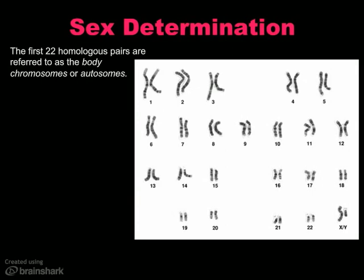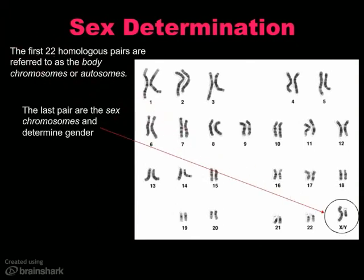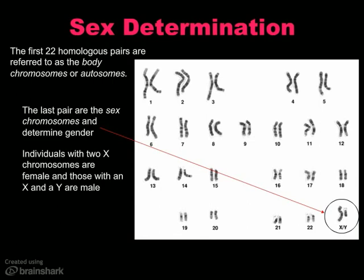Parents can often find out the gender of their unborn baby through an ultrasound, but sometimes they still get a little surprise, as some parts can be mistaken for other parts when still in development. A more invasive way would be through the karyotype. The first 22 homologous pairs of chromosomes are referred to as the body chromosomes or autosomes, and the last two are referred to as the sex chromosomes — the ones that determine gender. For humans, if you have two large chromosomes, you are XX — the large chromosome is the X chromosome — and you are a girl. If you have one large and one tiny chromosome, the little one is the Y chromosome, so if you're XY, you're a male.